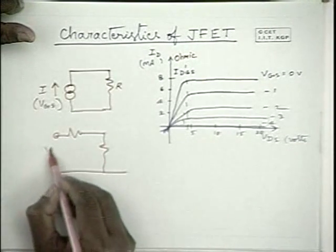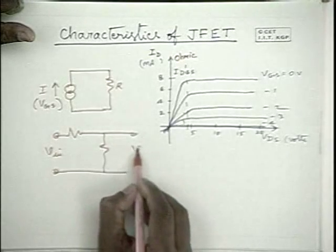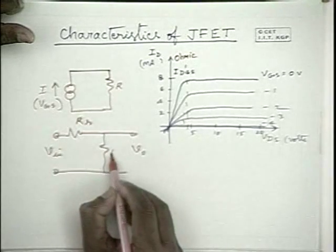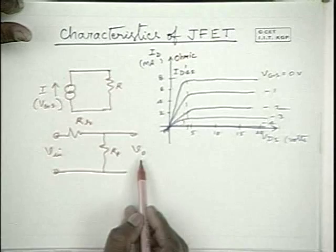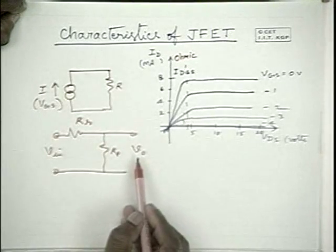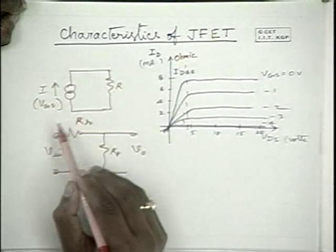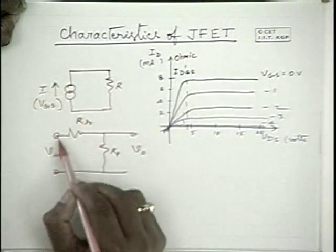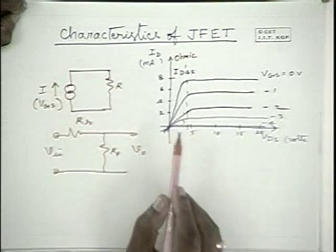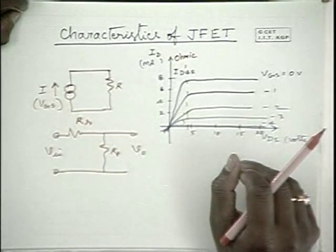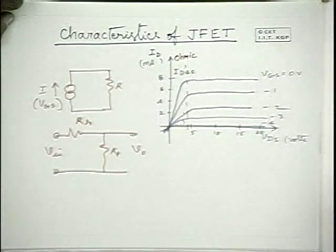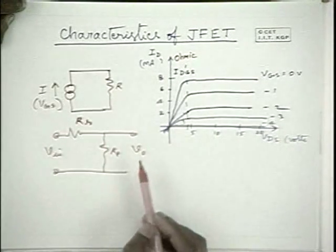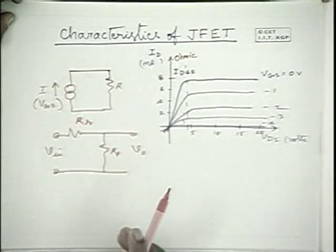You apply an input and this is the output. If the series resistance increases, the output decreases. So, if you use this as a voltage dependent resistance in series and if you make it dependent on the output voltage strength, you can see that this resistance increases with large output voltage. That way you can have a voltage dependent ratio, and that is responsible for automatic gain control.